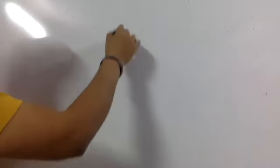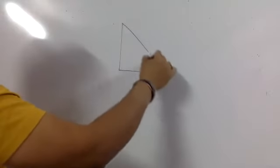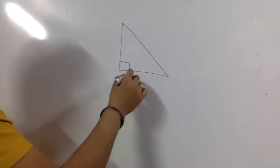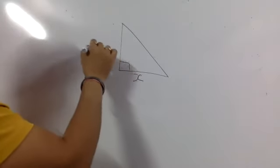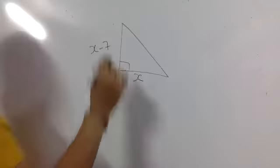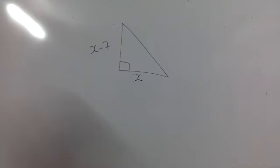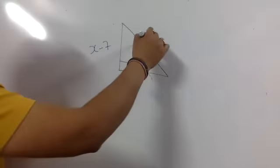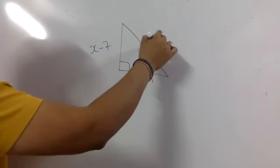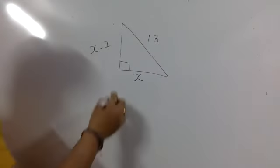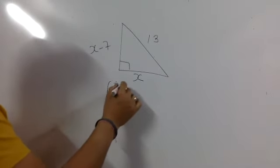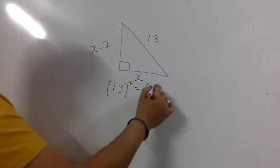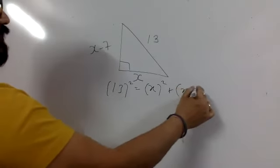The altitude of a right triangle is 7 cm less than its base. If the hypotenuse is 13 cm, you all know H square is equal to this and this.